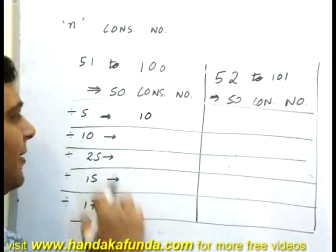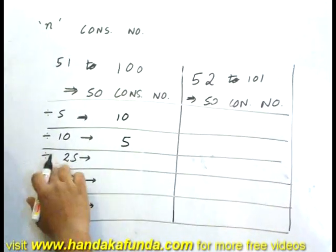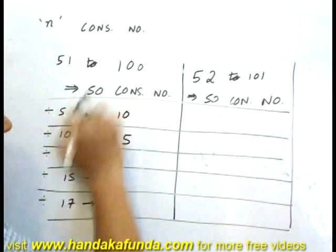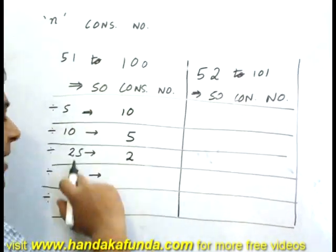How many will be divisible by 10? 10 is a factor of 50, exactly five of them. How many will be divisible by 25? Again 25 is a factor, so I can say 2. How many will be divisible by 15?